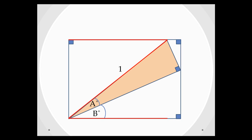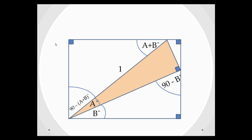Because of alternate angles, these two angles here will come together as A+B, and so up here we must have A+B. Because all three angles add up to 180, that's B, that's 90, this angle here must be 90 minus B. And if this is 90 and this is A+B, this must be 90 minus (A+B).